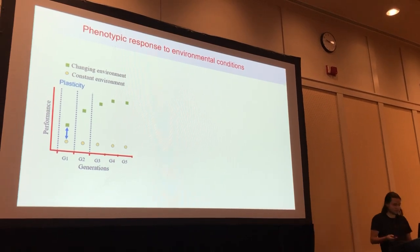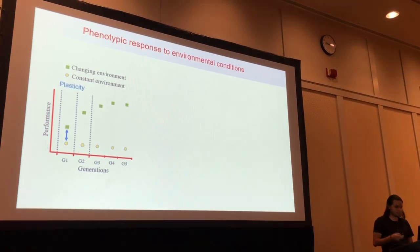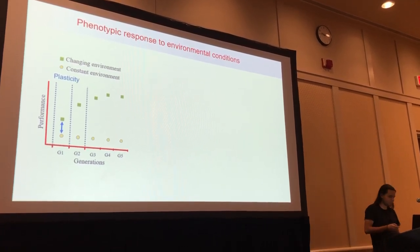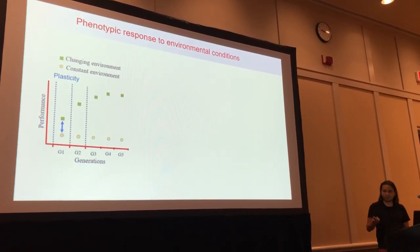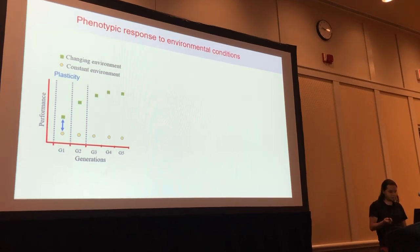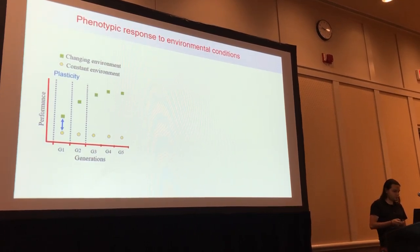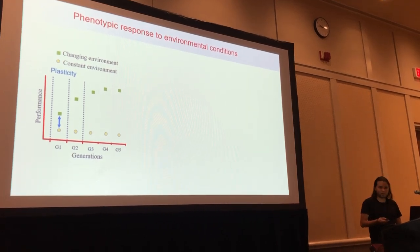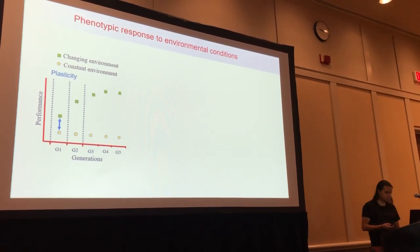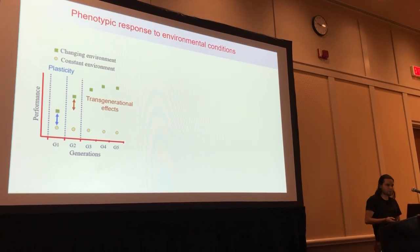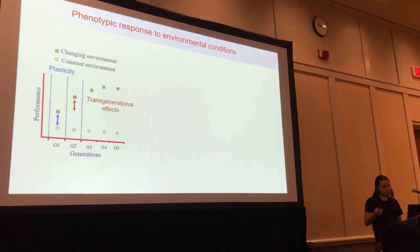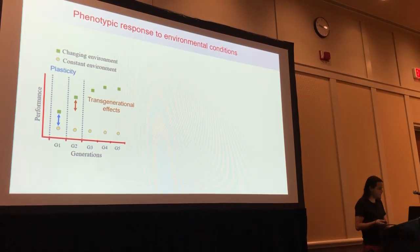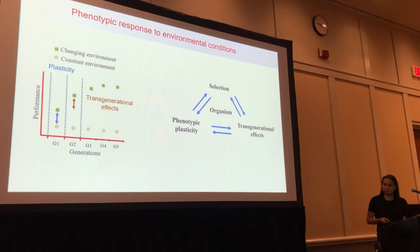We know that organisms can respond to environmental change in different ways — they can respond in plastic ways. We have two different kinds of plastic responses to environmental change. If they respond during the time of one generation, that's what we know as classical plasticity. But they can also have plastic responses across consecutive generations, which is what we know as maternal effects or transgenerational effects.